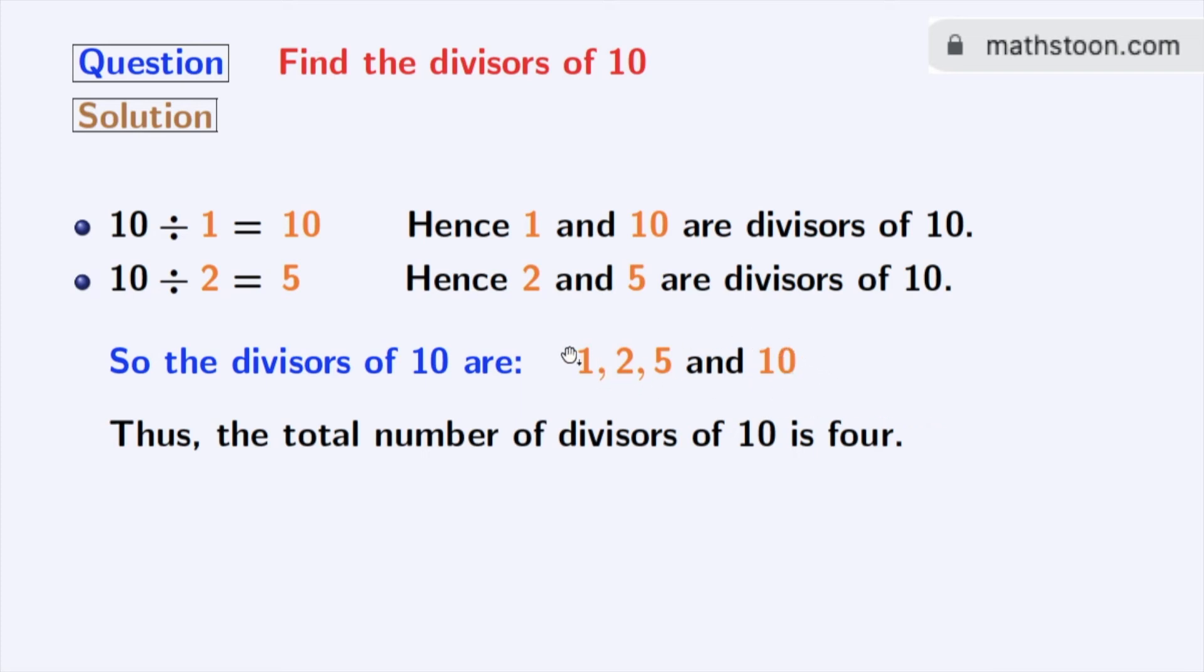Among these divisors, 2 and 5 are prime numbers, because these two numbers do not have any divisor other than 1 and that number itself. So, we can conclude that the prime divisors of 10 are 2 and 5.